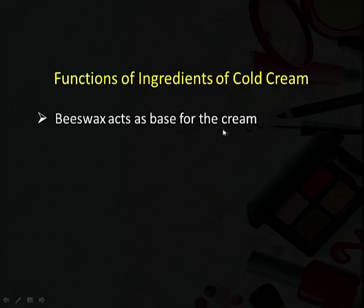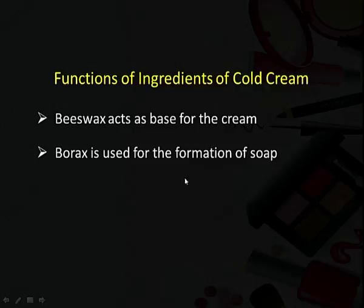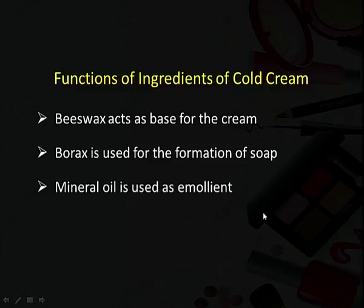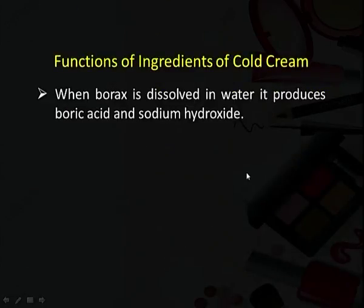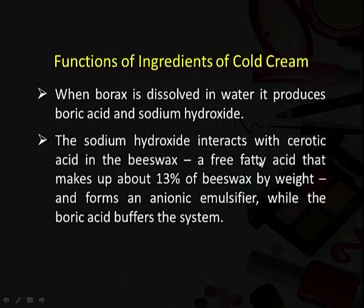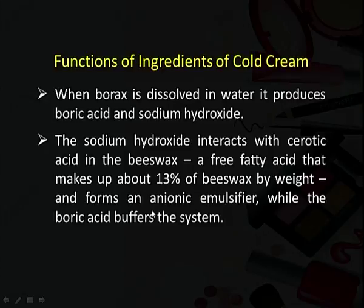Regarding the individual functions of these ingredients: beeswax acts as a base for the cream. Borax is used for the formation of soap, which is required for emulsification. Mineral oil is used as an emollient. When borax is dissolved in water, it produces boric acid and sodium hydroxide, which is then added to beeswax. The beeswax contains an acid called cerotic acid. This sodium hydroxide reacts with cerotic acid forming sodium cerotate — an anionic emulsifier — while the boric acid buffers the system.